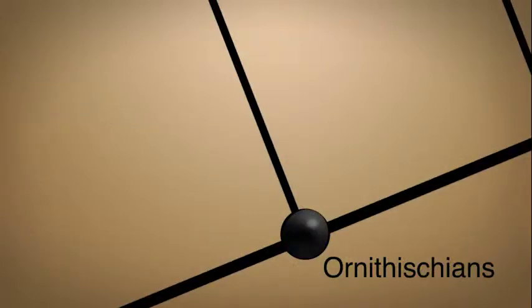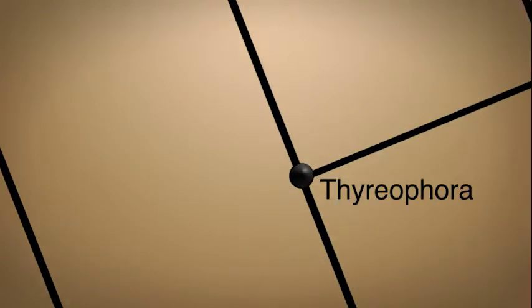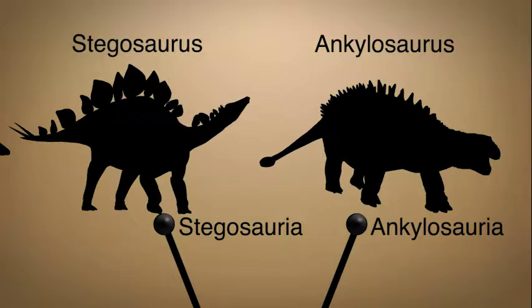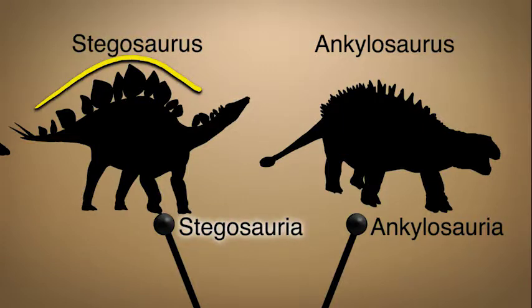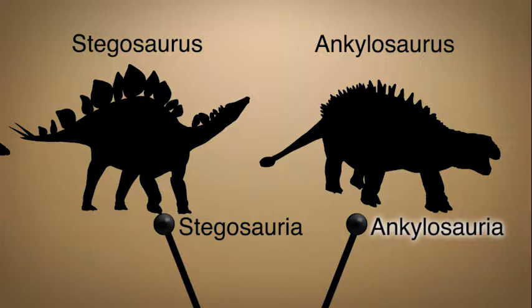The next group of ornithischians on our cladogram is the Thyreophora, which have bony plates in their skin like armor. They are subdivided into several smaller groups. The Stegosauria are armored along the back and tail. The Ankylosauria had flatter backs covered with horizontal plates and multiple rows of spikes on their sides and backs.